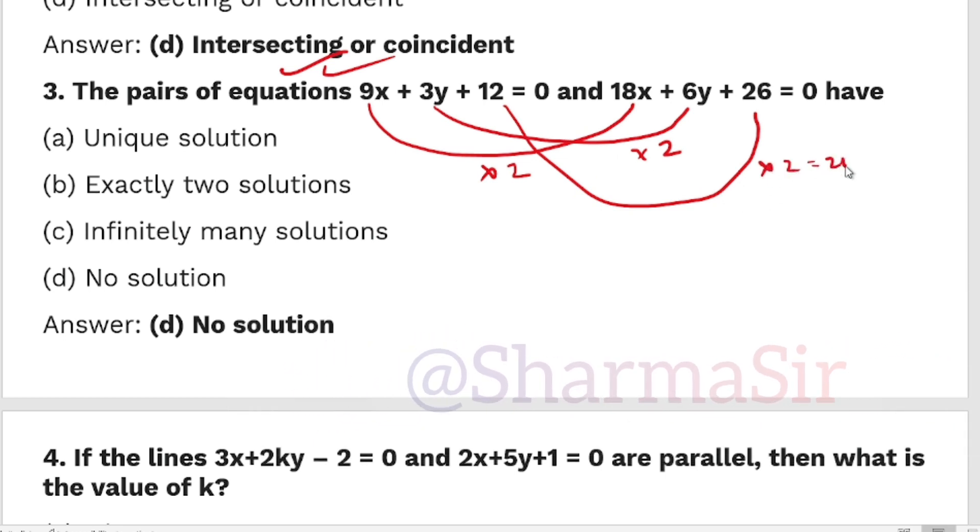Next question. A pair of linear equations 9x+3y+12=0 and 18x+6y+24=0. Checking the ratios: 9 times 2 is 18, 3 times 2 is 6, 12 times 2 is 24. So the answer is parallel, no solution.